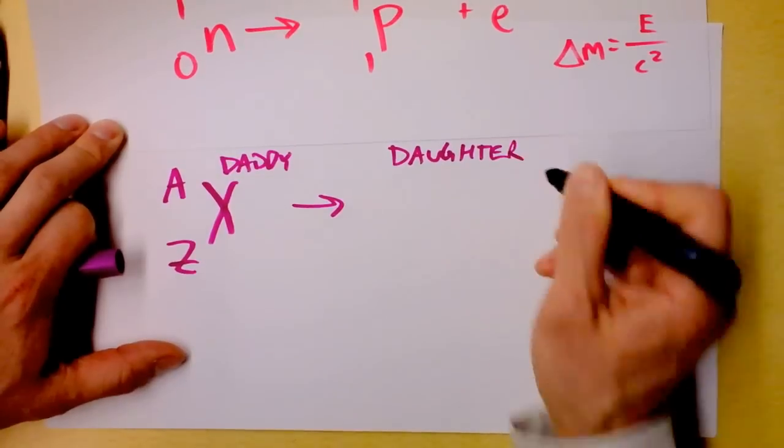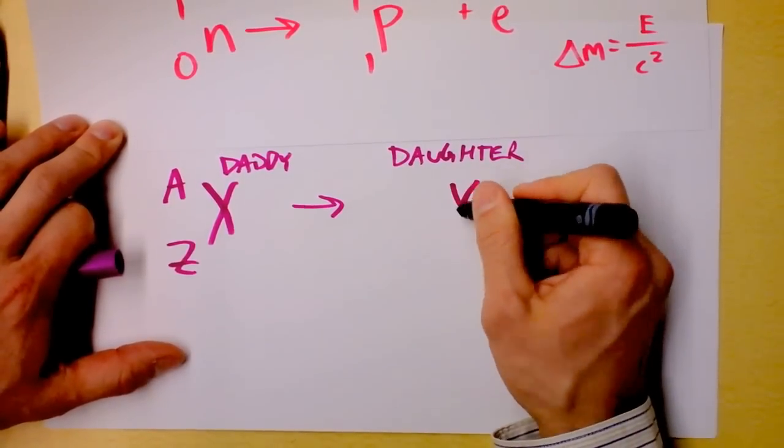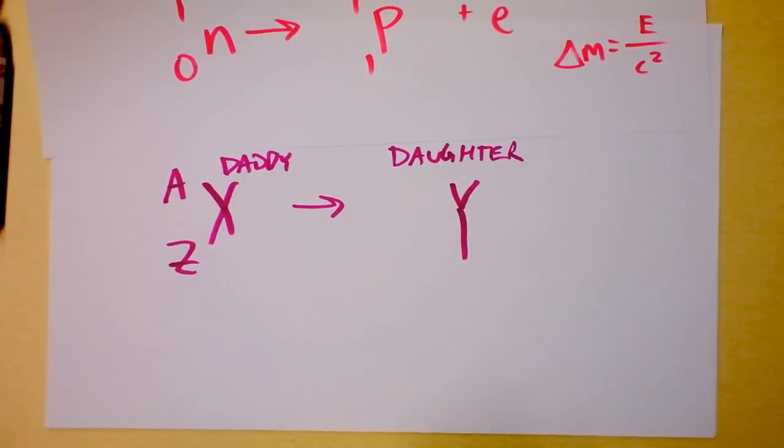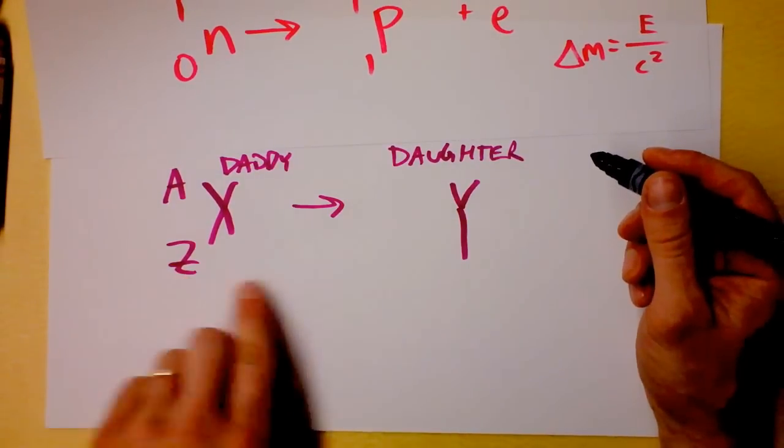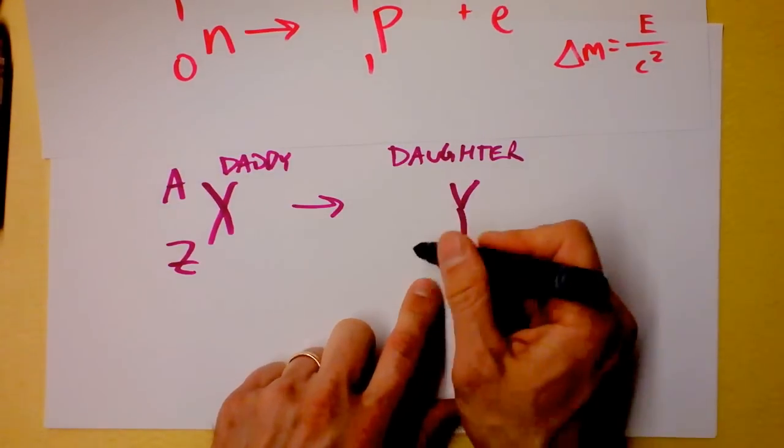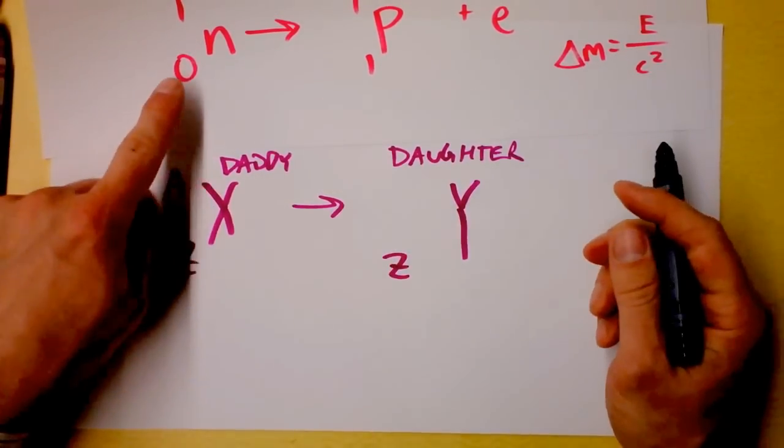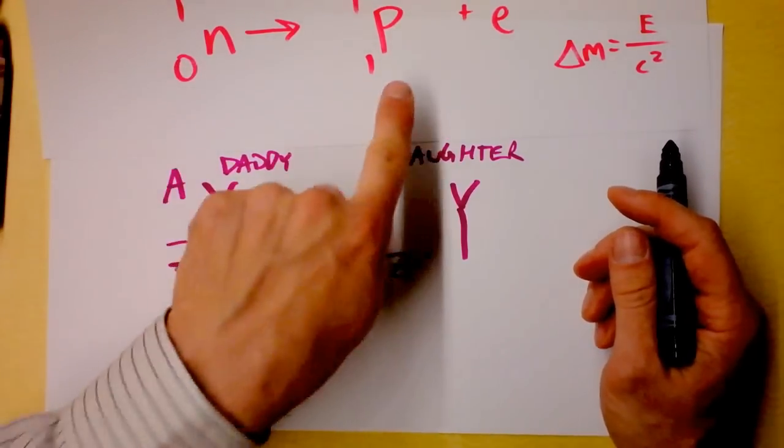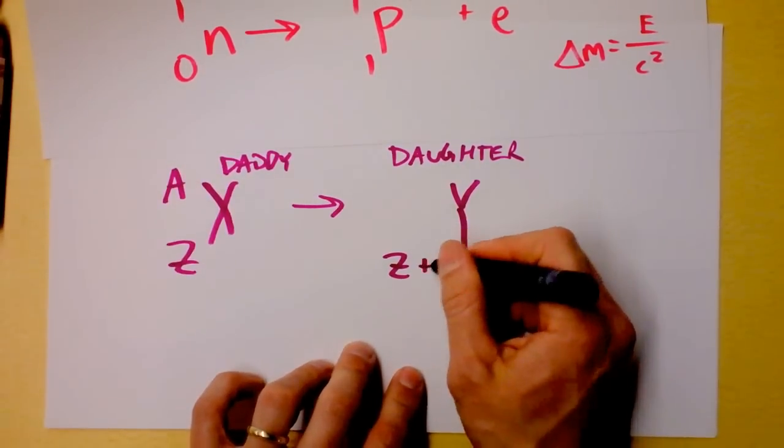Daughter. And the daughter is some other element. Oh, again, we've got the switching element thing. Now, does it have the same number of protons? It can't because it's a new element, right? So what do we have to do? What happens to the numbers of protons if one of your neutrons turns into a proton? Well, shoot, you're going to have more protons.